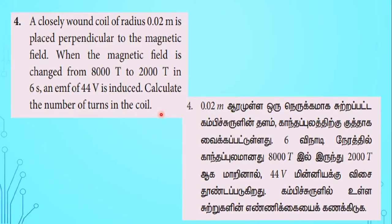So mainly here they have given the radius of the coil, 0.02 meters, and it is placed perpendicular to the magnetic field. The field changes from 8000 tesla to 2000 tesla in 6 seconds, and induced emf is 44 volts. Now we want to find the number of turns the coil is wound in the system.